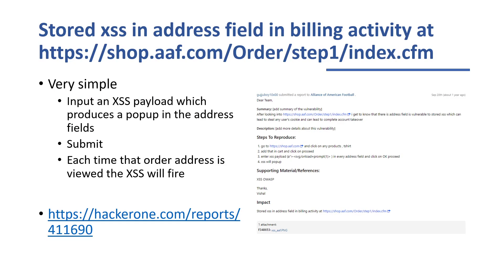This is a really simple one: they found a vulnerable form, put in a payload, it pops up, and that's it. This is another example where the impact hasn't really been demonstrated — the impact listed is 'stored XSS in the address field in billing activity,' which isn't the impact, that's just the explanation of the bug. It is worth saying that this did pay out though. So even if you can't get full exploitation, if you can fire alert one, they will pay out — it just won't be as high.